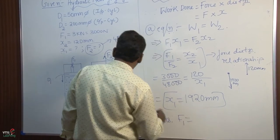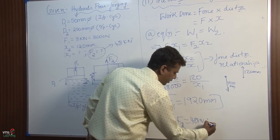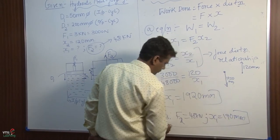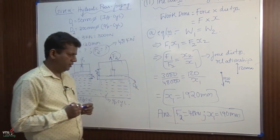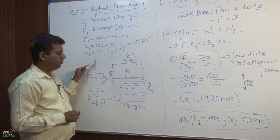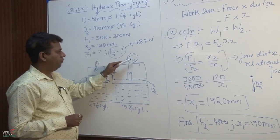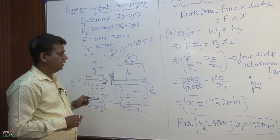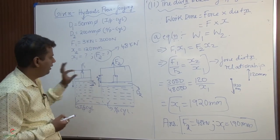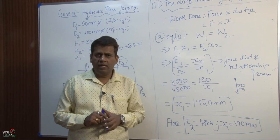So the answers are: F2 equals 48 kilo Newton, and the distance moved by the input cylinder X1 is 1920 millimeter. Comparing: F1 is 3 kilo Newton and F2 is 48 kilo Newton — force multiplication. X1 is 1920 mm while X2 is 120 mm. This comparison is important. You must solve systematically: list input variables, check units, draw the configuration diagram, apply Pascal's law, then the force-distance relationship.